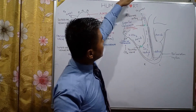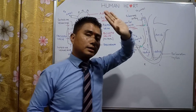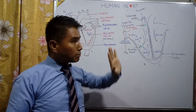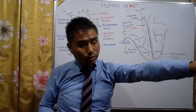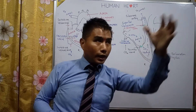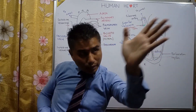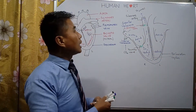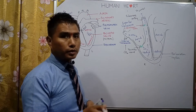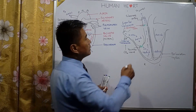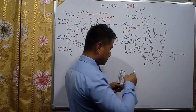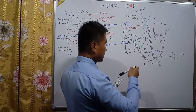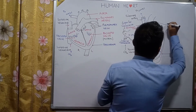The blood has already reached the lungs, gas exchange has taken place — carbon dioxide is given to the lungs and oxygen is taken. That oxygenated blood is then brought back to the heart with the help of a blood vessel known as the pulmonary vein.